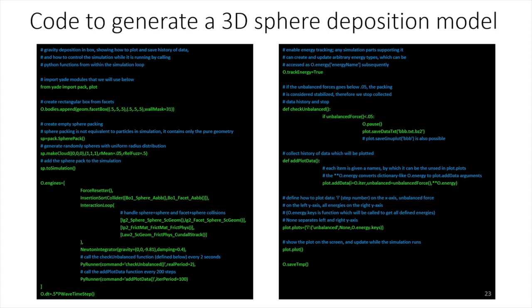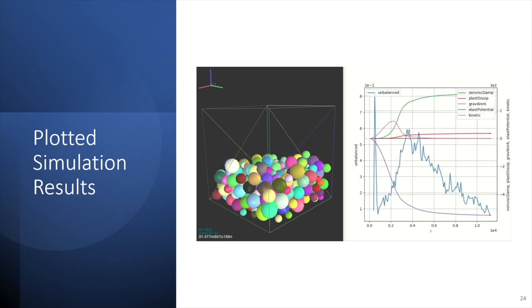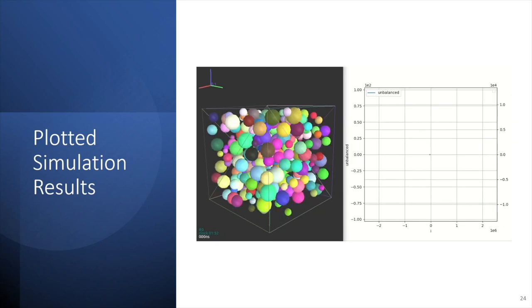So here we see the visualized result of the simulation as well as a dynamic plot of the data we recorded. The spheres are released from stasis, fall, collide, bounce, shift, and finally settle. The simulation ends shortly after the majority of the movement that can be easily perceived dies down, meaning our unbalanced force criterion was met and the simulation was halted. Here I'll play the simulation for you one more time.